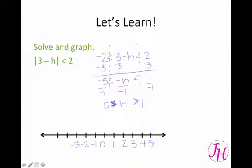Now, if you look, our inequalities are going the wrong direction, and our numbers aren't in order. So we can rewrite that as 1 is less than h is less than 5.